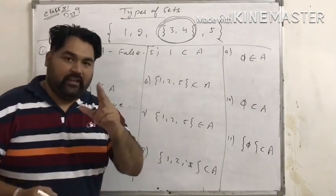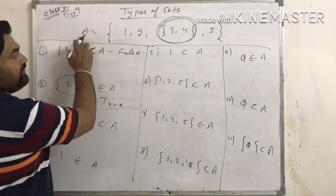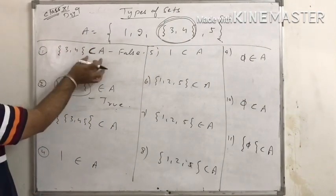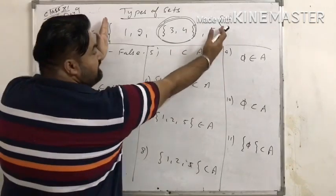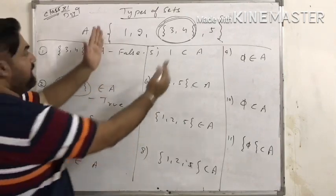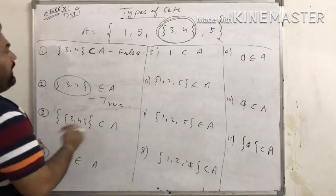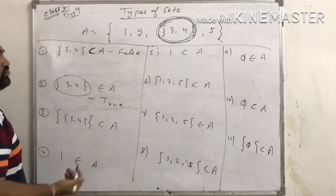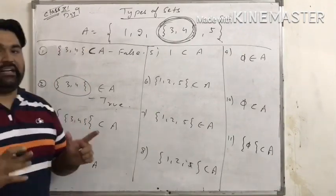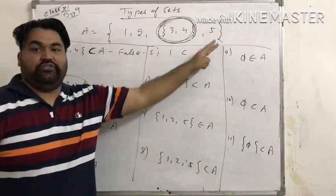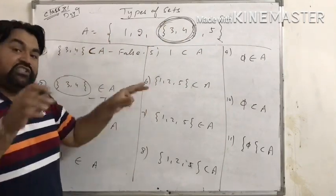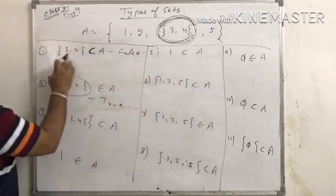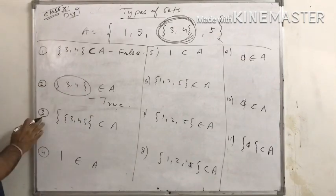Another example related to the concept of 'belongs to' versus subset: if A = {1, 2, {3, 4}, 5}, then {3, 4} ⊆ A? No — {3, 4} is an element of A here. So {3, 4} ∈ A is true, because the set {3, 4} is itself an element present inside A. A subset sign (⊆) is associated with curly braces — it means the whole set is contained within another.